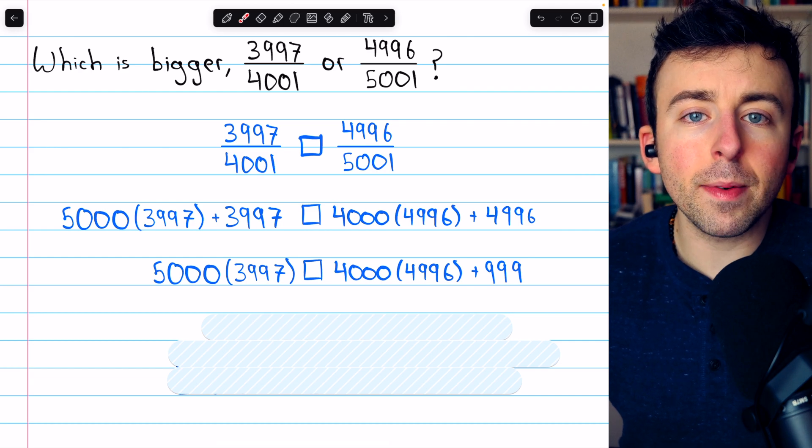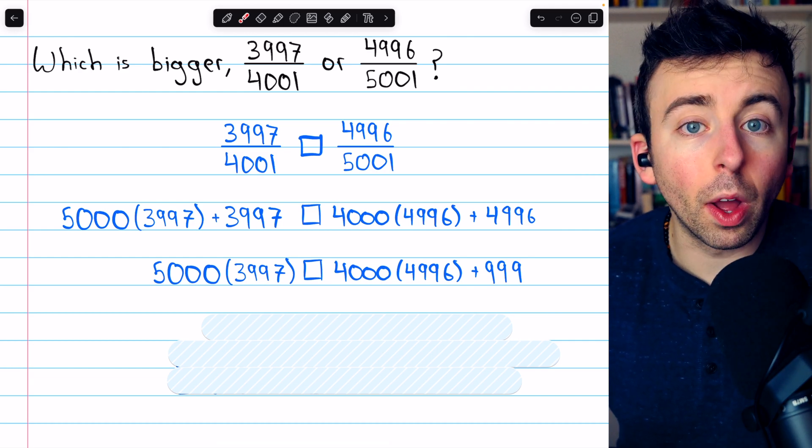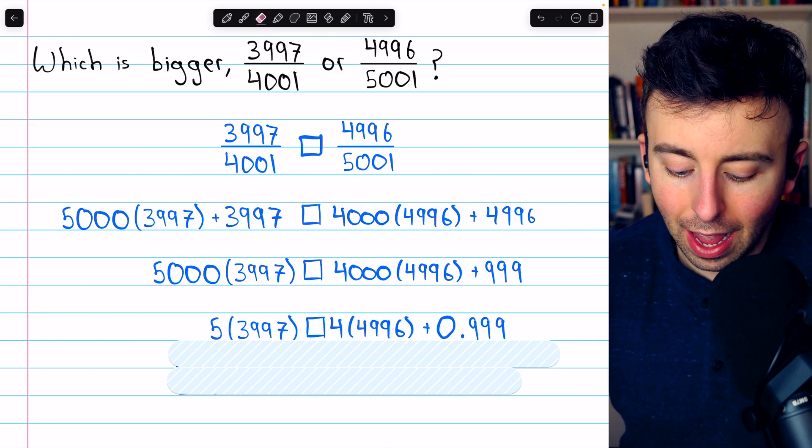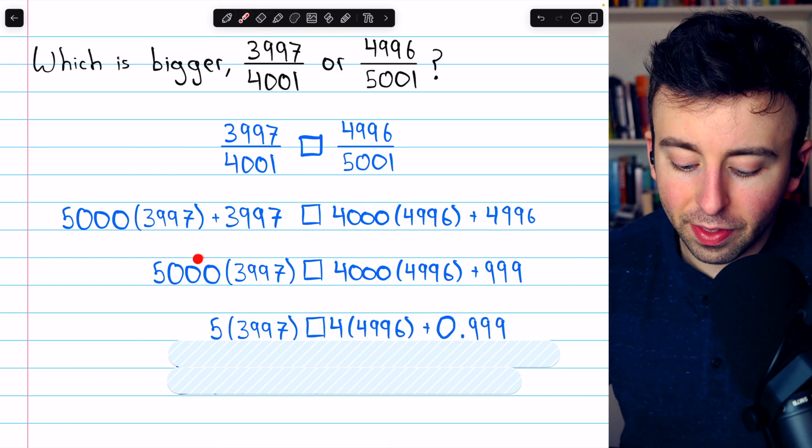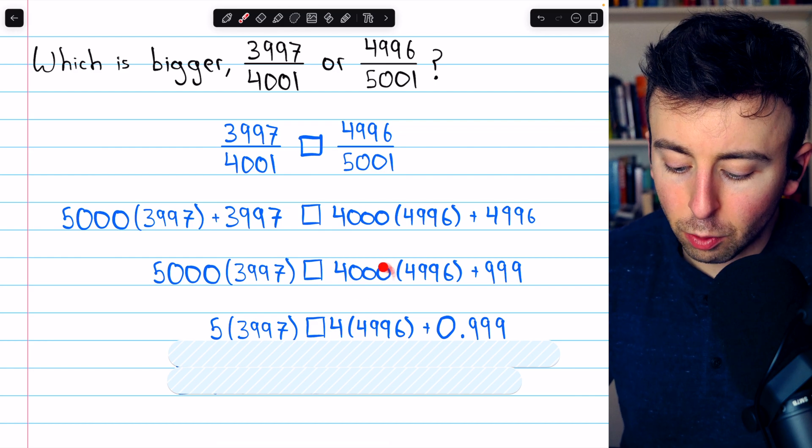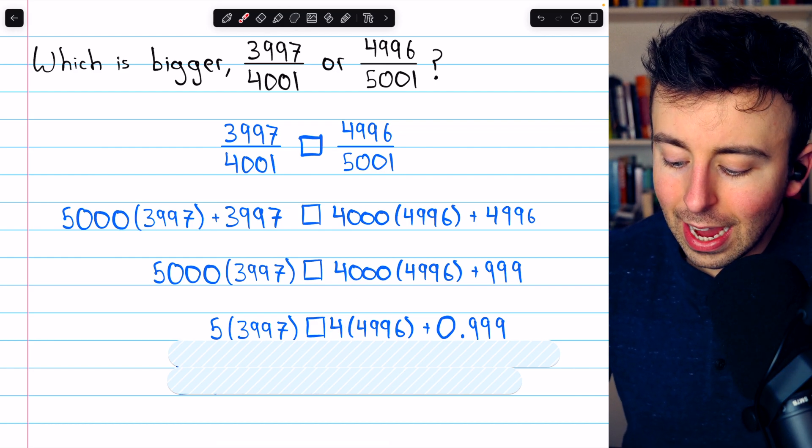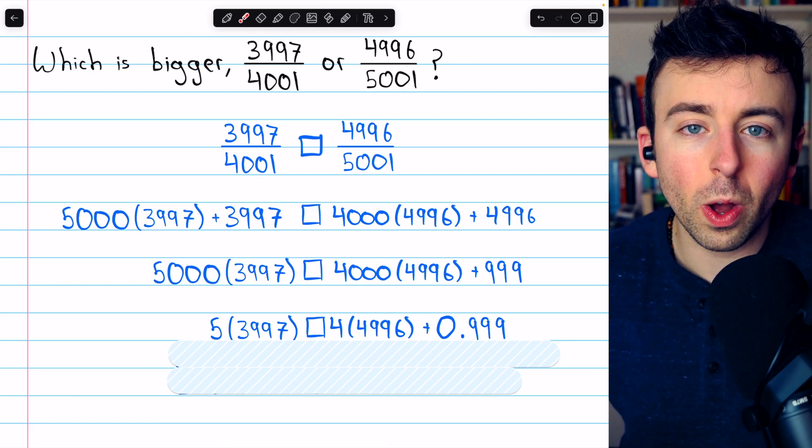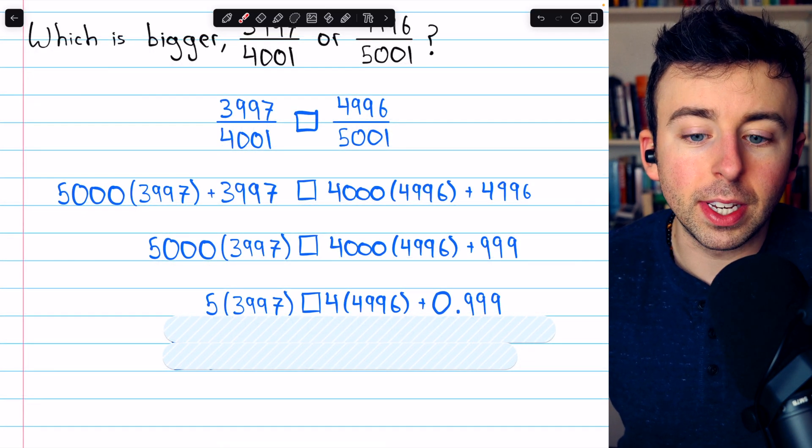Now we can perform a pretty clean division by 1,000. Let's divide the left and right sides both by 1,000. Now this factor of 5,000 becomes 5, this factor of 4,000 becomes 4, and 999 divided by 1,000 is just 0.999, very close to 1. Now we can just do the arithmetic.